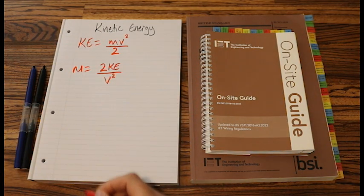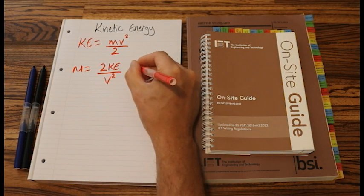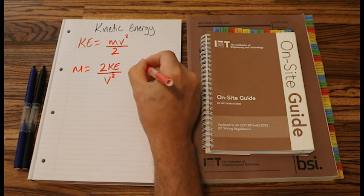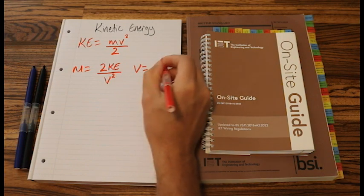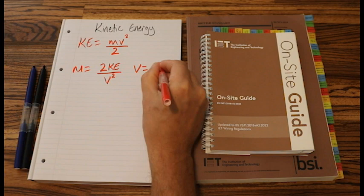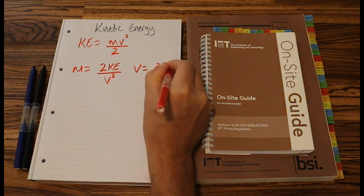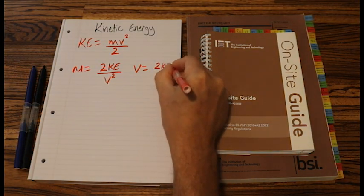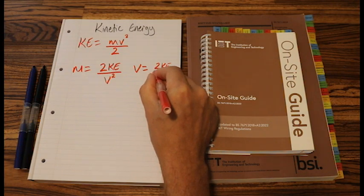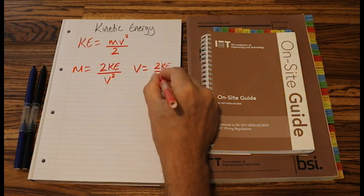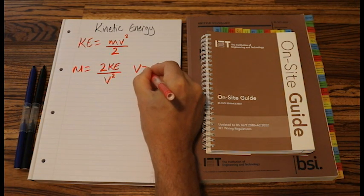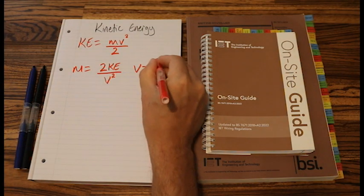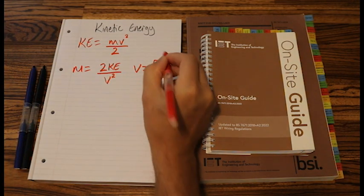And we'll have the last one will be v squared equals 2KE over m, and then that whole equation squared root.